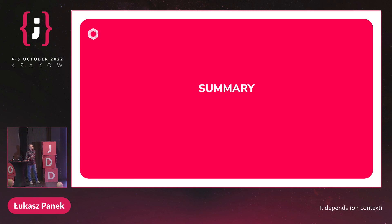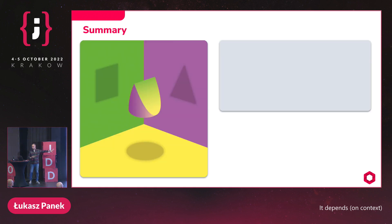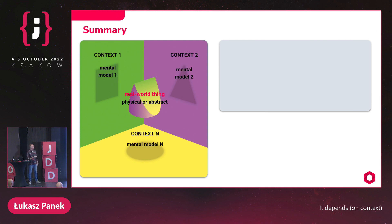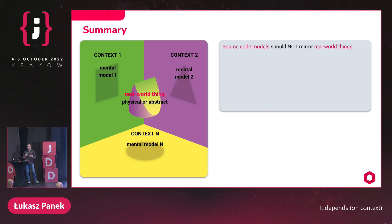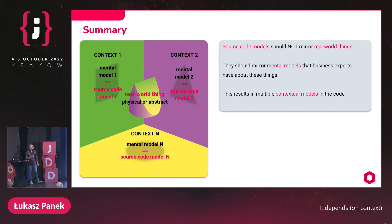Summary: for any real-world object — physical or abstract — it may look differently in the minds of our business experts. Depending on context, business experts may have completely different mental models of the same thing: rectangle, triangle, or circle. Our source code models should not mirror the real-world thing in the center. Our models are created to help our users — so they should mirror the mental models that business experts have. We should create separate models to help each context, resulting in multiple contextual models. This is the opposite of the big unified model approach.